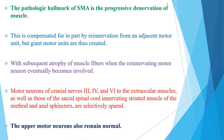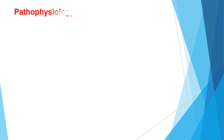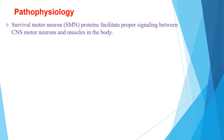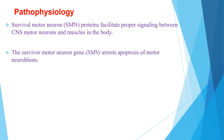The upper motor neurons almost remain normal in the case of spinal muscular atrophy. Regarding pathophysiology, survival motor neuron protein facilitates proper signaling between central nervous system motor neurons and the muscles in the body. The survival motor neuron gene arrests apoptosis of motor neuroblasts normally.